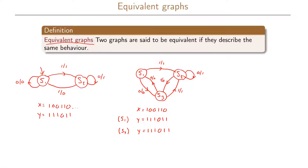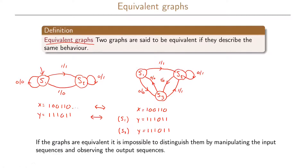Comparing these two behaviors, it seems that these two graphs might be doing the same thing, because for the same input we also get the same output, and also regardless of whether we start in S1 or S3 we get the same output sequence. This is not a formal proof that the two graphs are equivalent, but it seems to be the case. If the graphs are equivalent, then it is impossible to distinguish them by manipulating the input sequences and observing the output sequences.